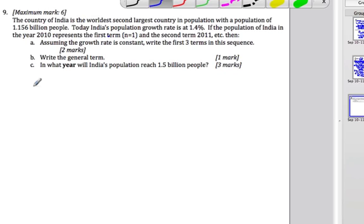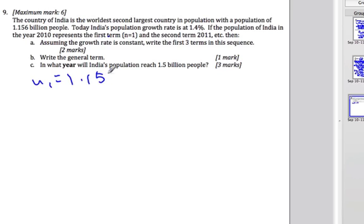So if the population of India in the year 2010 represents the first term and the second term 2011 etc., assuming the growth rate is constant, write the first three terms. Well U1, that's the easy one, is 1.156. Let's just assume it's in billions. We don't need to write that out. I'll put little billions at the beginning here.